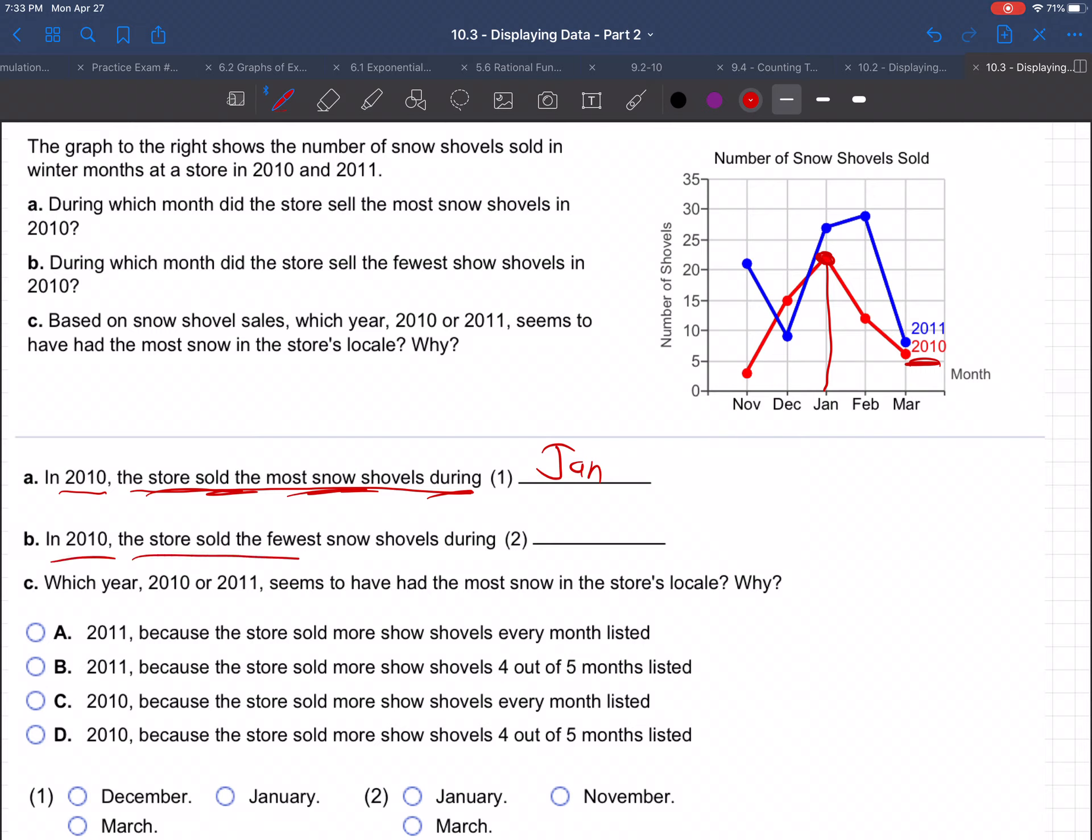In 2010, the store sold the fewest snow shovels during, when were they lowest? November, right? That's the lowest. The red graph, the 2010 graph, goes lowest in November.